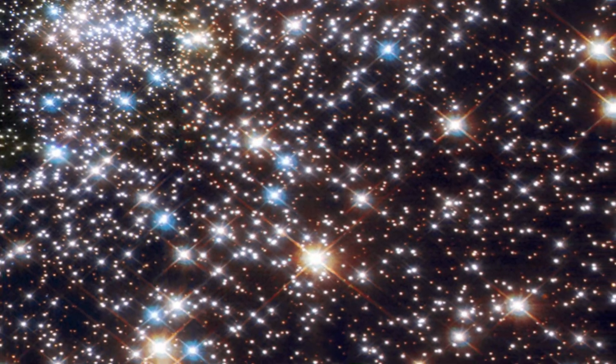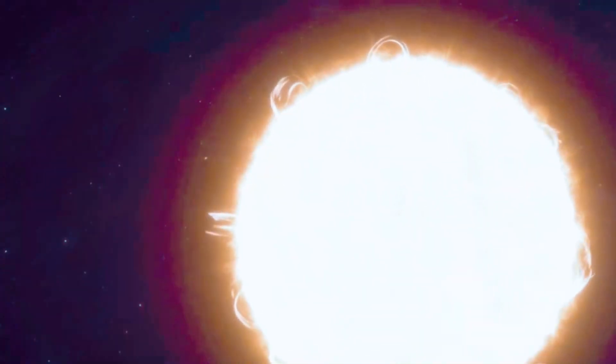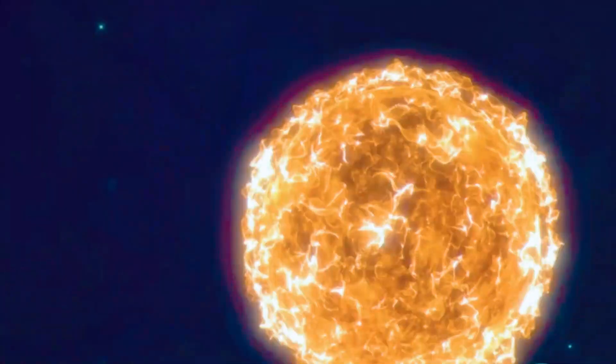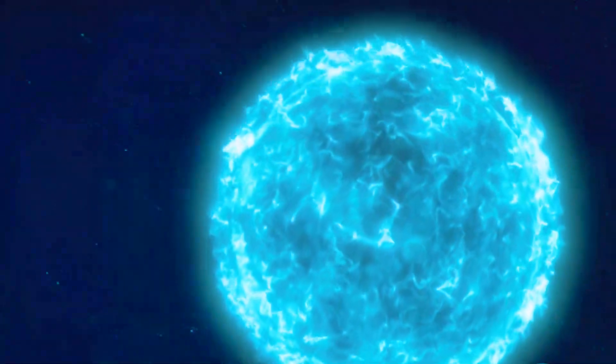They come in a variety of sizes and colors, from small cool red dwarfs to massive hot blue giants. The color of a star is determined by its temperature, with cooler stars appearing red and hotter stars appearing blue or white. The largest stars, known as supergiants, can be hundreds of times larger than our sun and thousands of times more luminous.